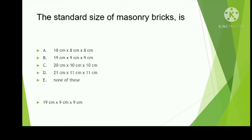The standard size of masonry brick is: 18×8×8 cm, 19×9×9 cm, 20×10×10 cm, 21×11×11 cm, or none of these? The answer is 19×9×9 centimeters.